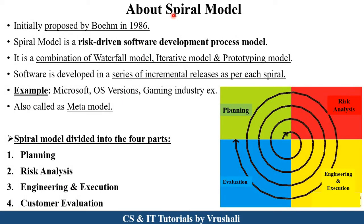The first point is what exactly is the spiral model. The spiral model was initially developed by the scientist Boehm in 1986. It is also called as a meta model. The spiral model is generally used in large projects and projects which have lots of risk and problems. That's why it is also called a risk-driven software development process model. The spiral model is a combination of the waterfall, iterative, and prototyping models.